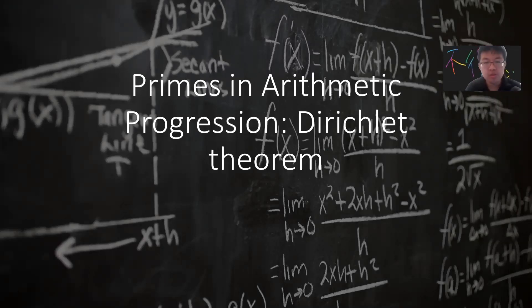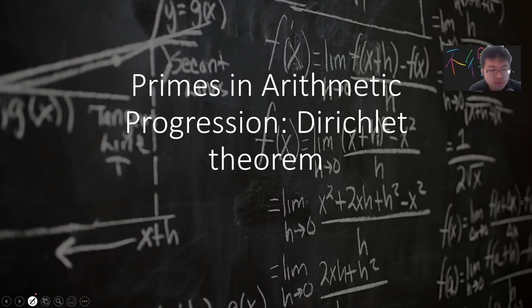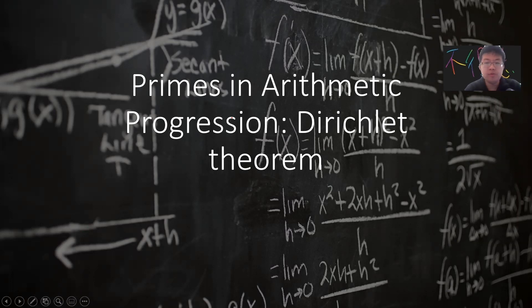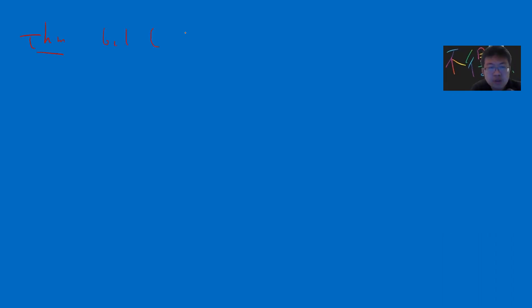Today I want to talk about primes in arithmetic progressions. This will be the final chapter of my analytic number theory lecture series — I'll post the link below. I'll spend the next three videos describing the details of Dirichlet's famous theorem. This first one will give you some basic ideas, and then we'll go step by step. The main theorem I'm going to prove is the famous Dirichlet theorem.